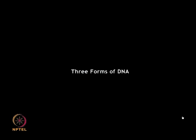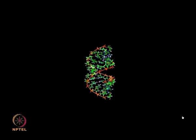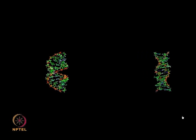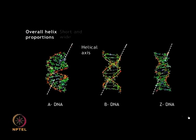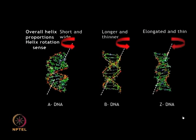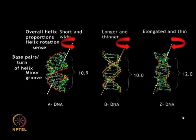Three forms of DNA exist: A-DNA, B-DNA, and Z-DNA. A and B are right-handed helices, whereas Z-DNA is a left-handed helix. There are 10.9, 10, and 12 base pairs per helix turn in A, B, and Z DNA respectively. They differ in their overall structural proportions as well as in the proportions of their major and minor grooves.